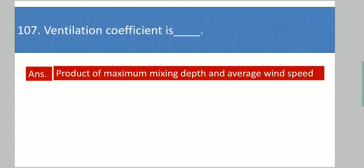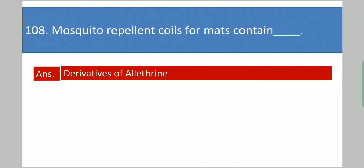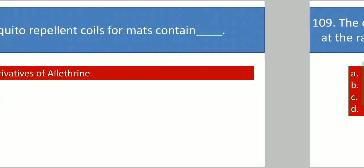Next question: Mosquito repellent coils and mats contain dash. Your options are: paraquat, BHC, texaphene, or derivatives of allethrin. Your answer is derivatives of allethrin.